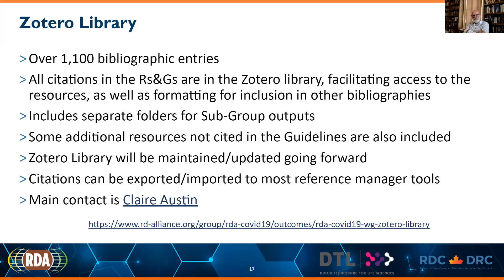There are over 700 citations in the guidelines and recommendations themselves, with additional citations in the Zotero library that aren't in the guidelines. About 20 or 30 people are currently maintaining that Zotero library, with the intention to update it going forward. The link provided will take you to an explanation page about the Zotero library that Claire Austin, who was the lead on the Zotero piece, maintains. Once you open it, either in the web version or application version of Zotero, you can copy and make those citations, or add them to your local collection.